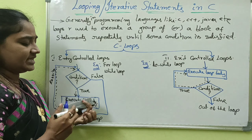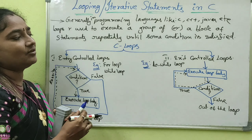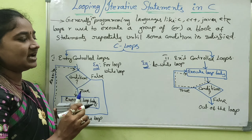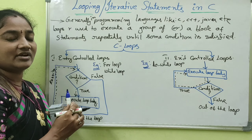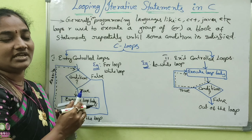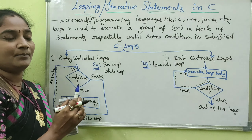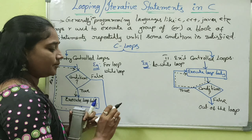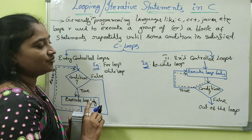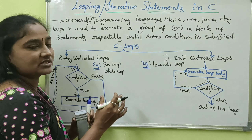To work with any type of loop, there are four basic parts we must have. These four things are needed to work with loops.